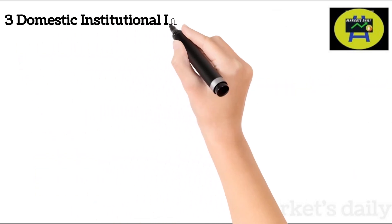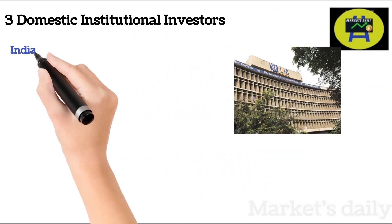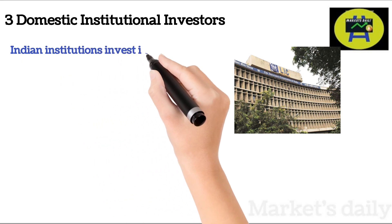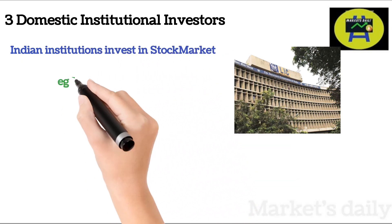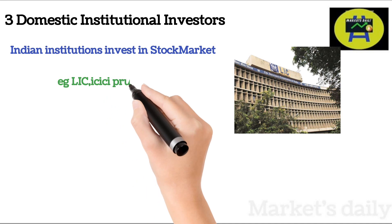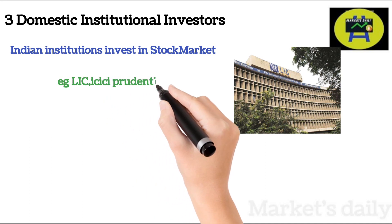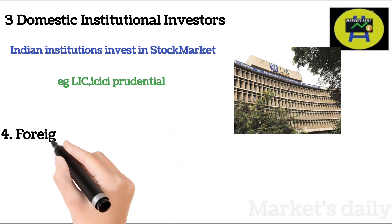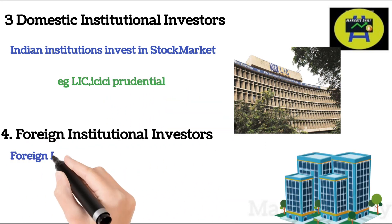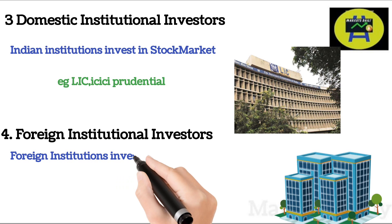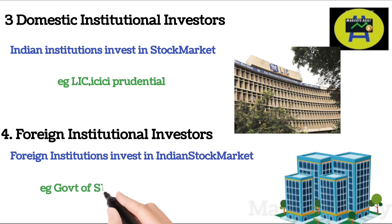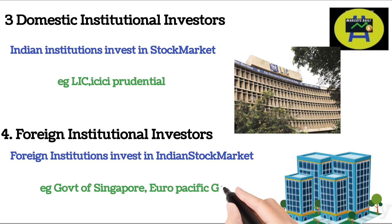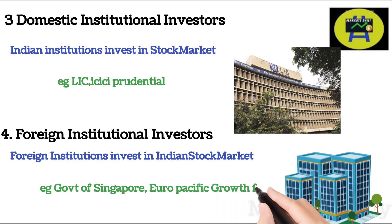DIIs are the Domestic Institutional Investors who invest in stock markets on behalf of their clients. Some examples are LIC and ICICI Prudential. FIIs are the Foreign Institutional Investors who are outside India and invest in our stock market on behalf of their clients — for example, the Government of Singapore and Europacific Growth Fund.